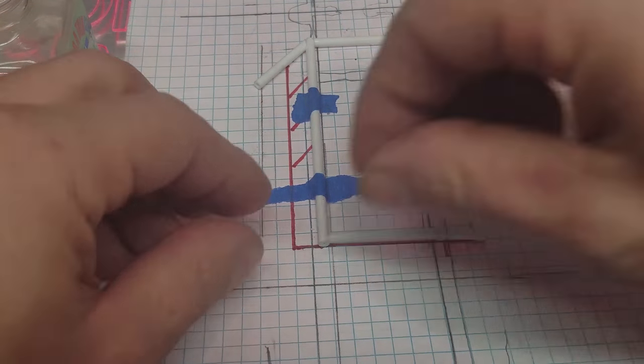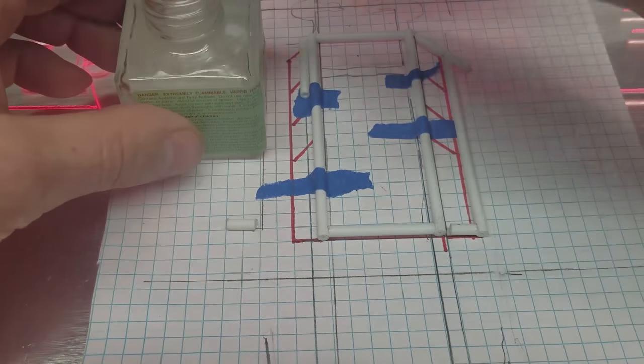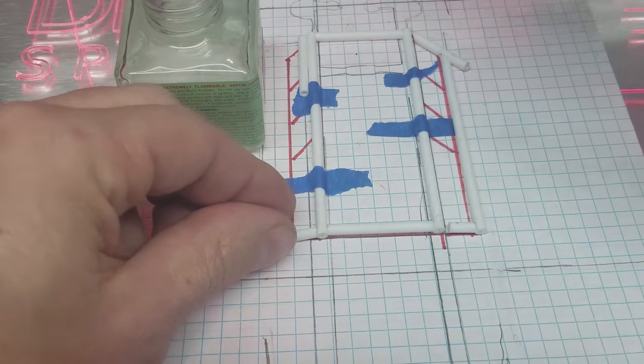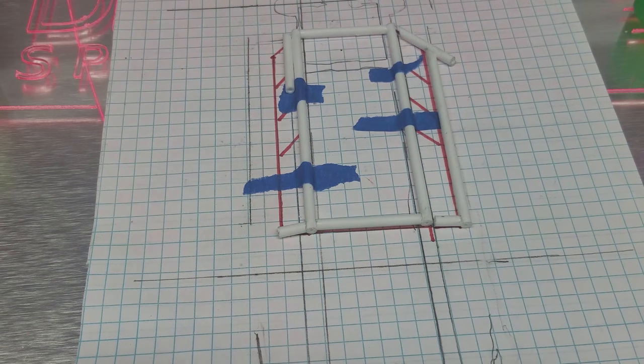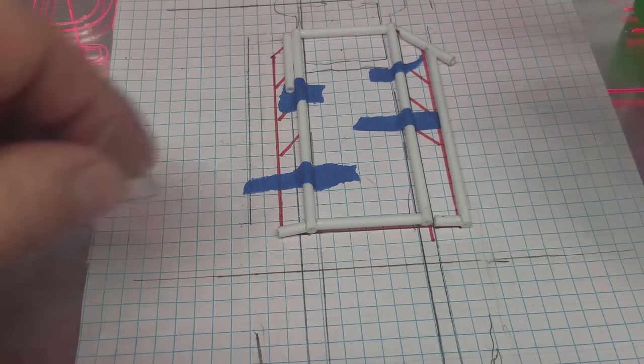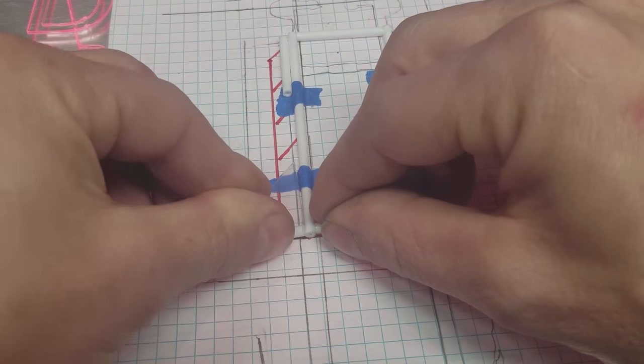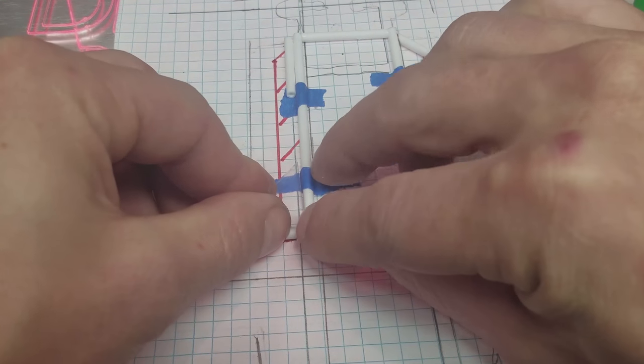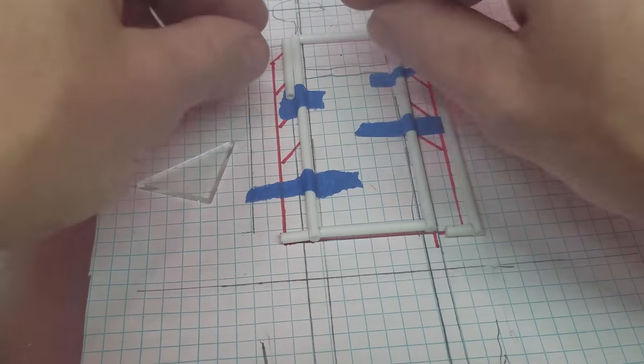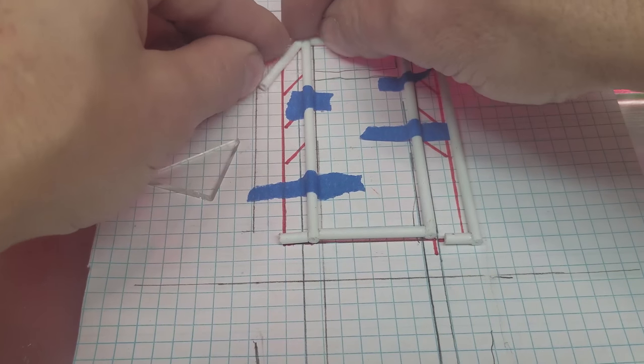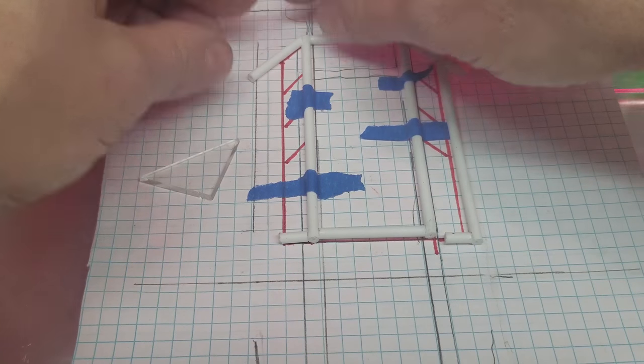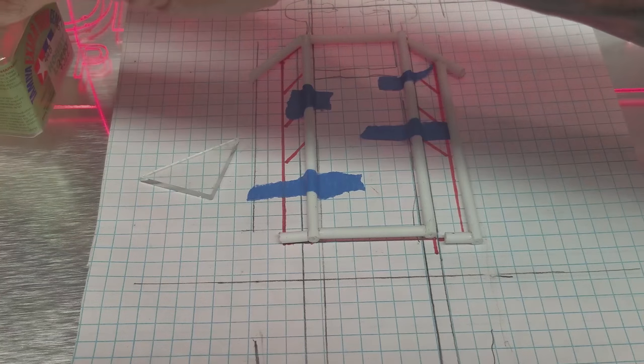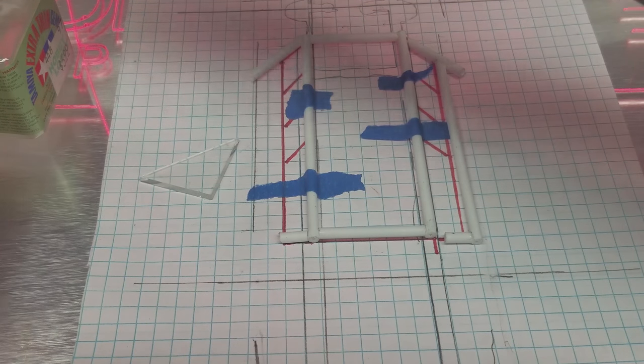Where'd that little one go? Okay then we're going to take this one down here and we're going to attach it down here. I'll take our square again. Does that top one fell off? It's all right. Make sure we're nice and square. And we'll take this one, put a little glue on those 45s.